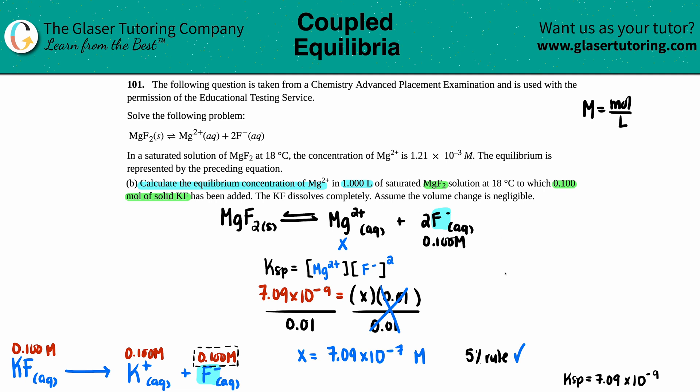Calculate the equilibrium concentration of Mg2+. It's 7.09 times 10 to the negative seventh molarity. This part is done. Hang tight for letter C - it's coming up in a bit. If you're on the playlist, I'll talk to you soon. I hope you guys are studying hard. Talk to you later.